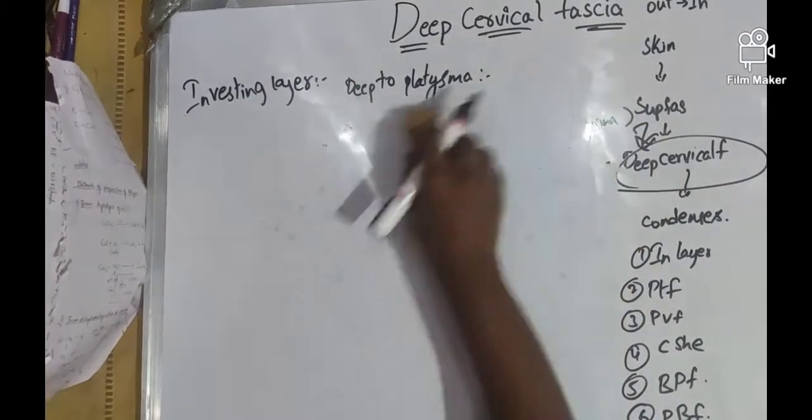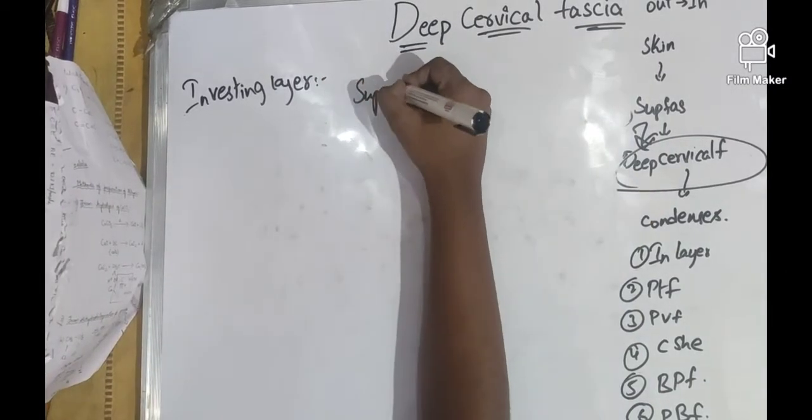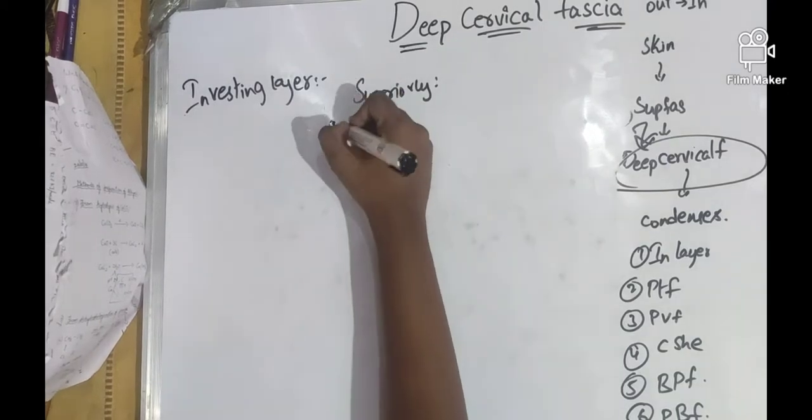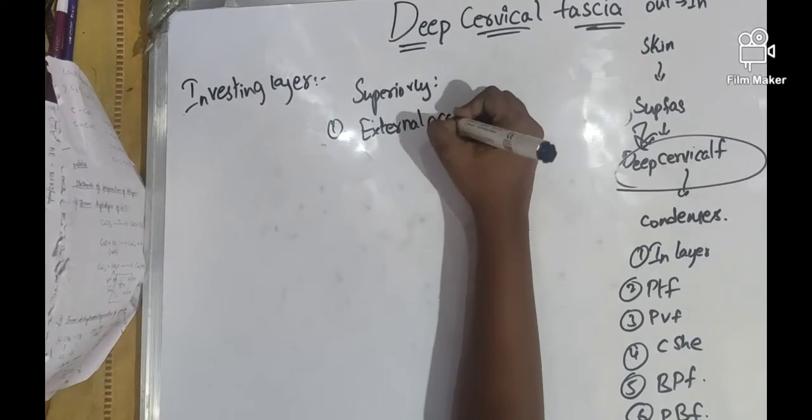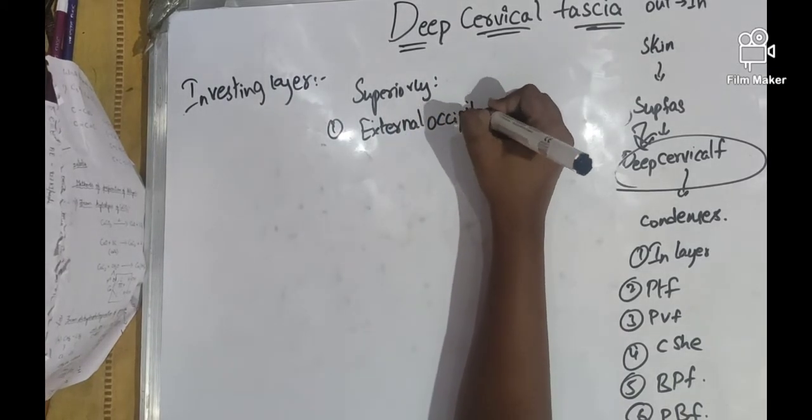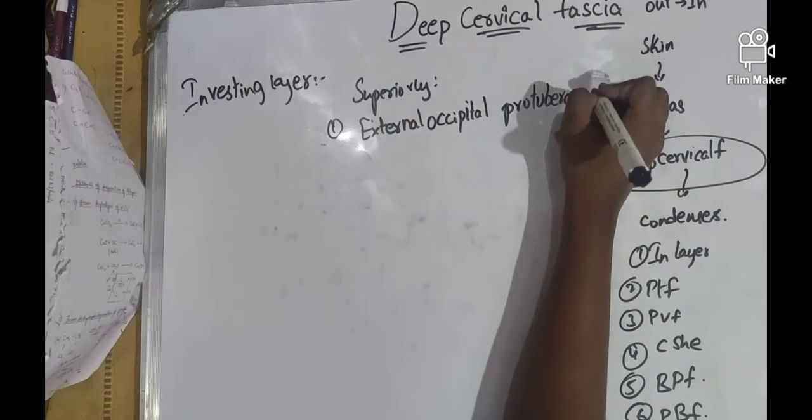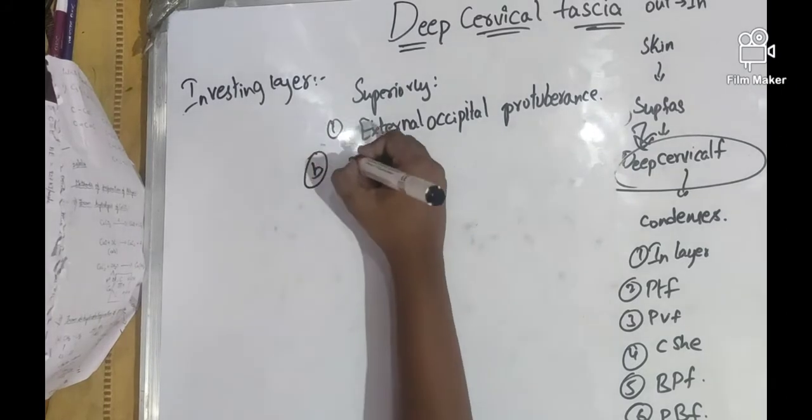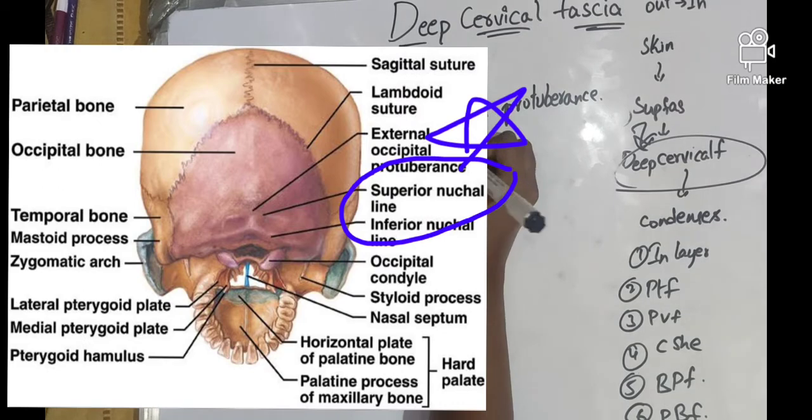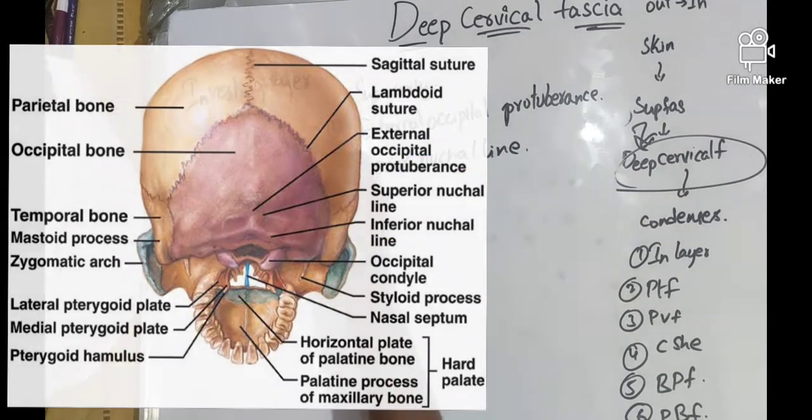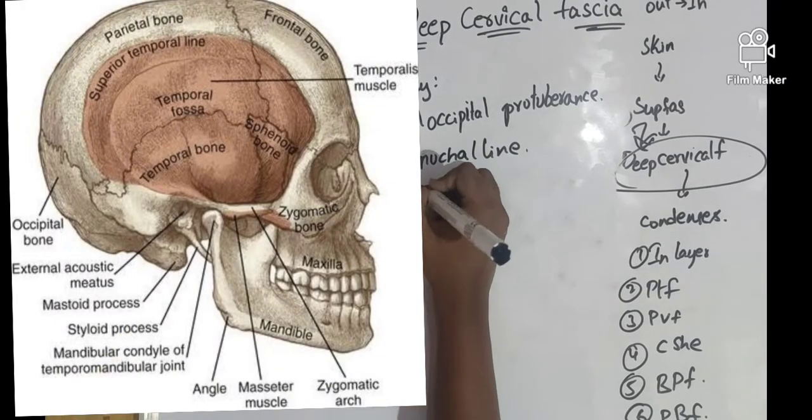When we see the attachments of the investing layer, superiorly: external occipital protuberance, superior nuchal lines, nuchal line, and the mastoid process and styloid process.